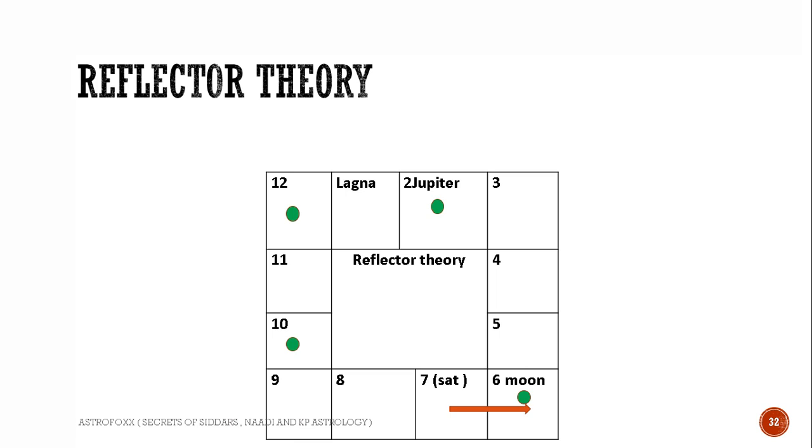Welcome to the online class of Astrology the Fox YouTube channel. Today we will see Reflector Theory in Nadi astrology. Basically, reflection is a process by which light is reflected back after receiving it from a particular source.